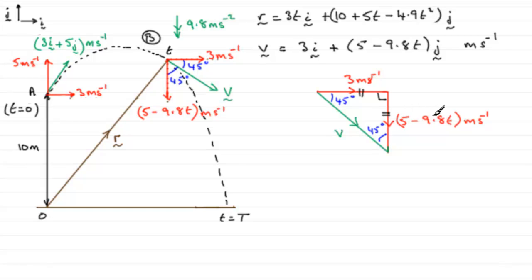The length will be 9.8T minus 5. So when it comes to considering the lengths, we know that 9.8T minus 5, this length, must equal this length here, 3.